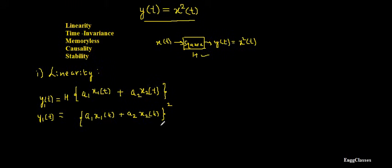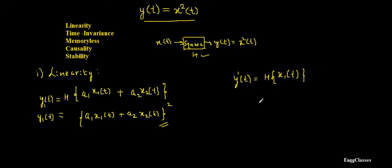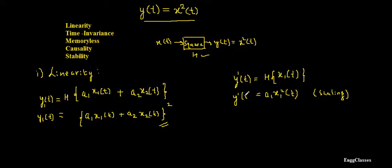That is the first part of the linearity test. Next, I consider the inputs independently. I give x1(t) to the system of operator h, getting output y'(t). After scaling by a1, I get a1·x1²(t) as part of output y'(t).